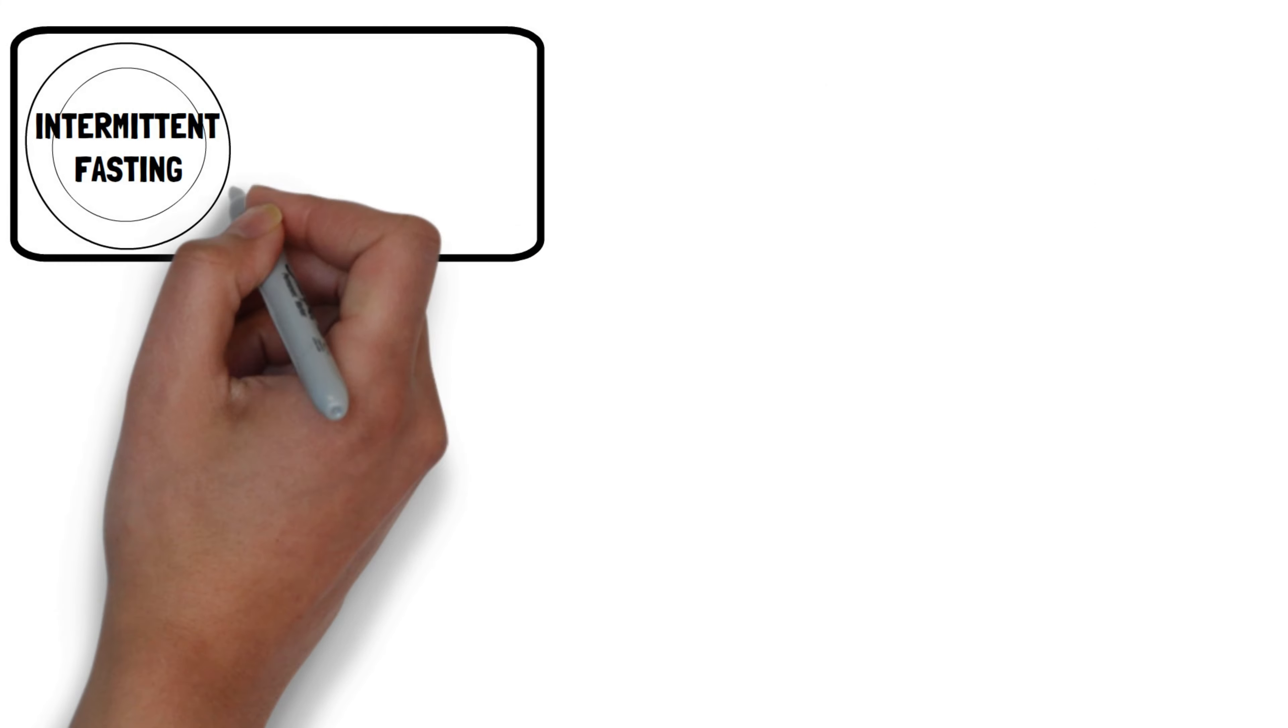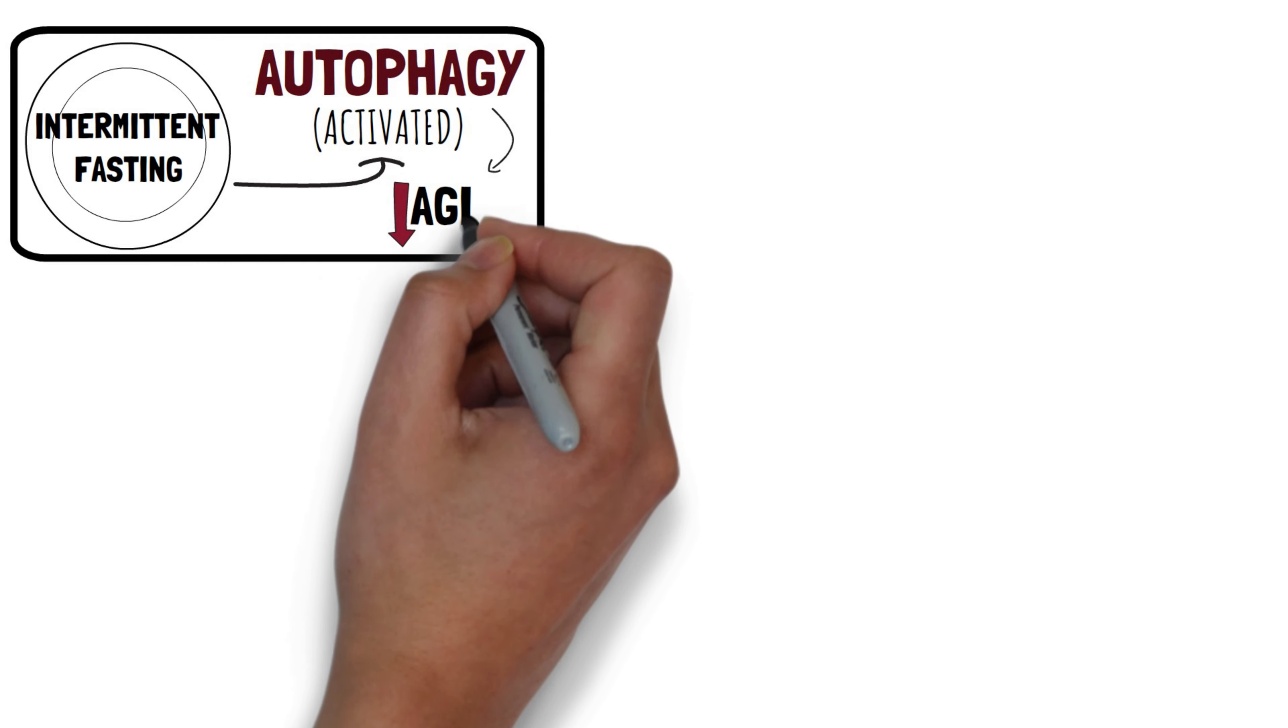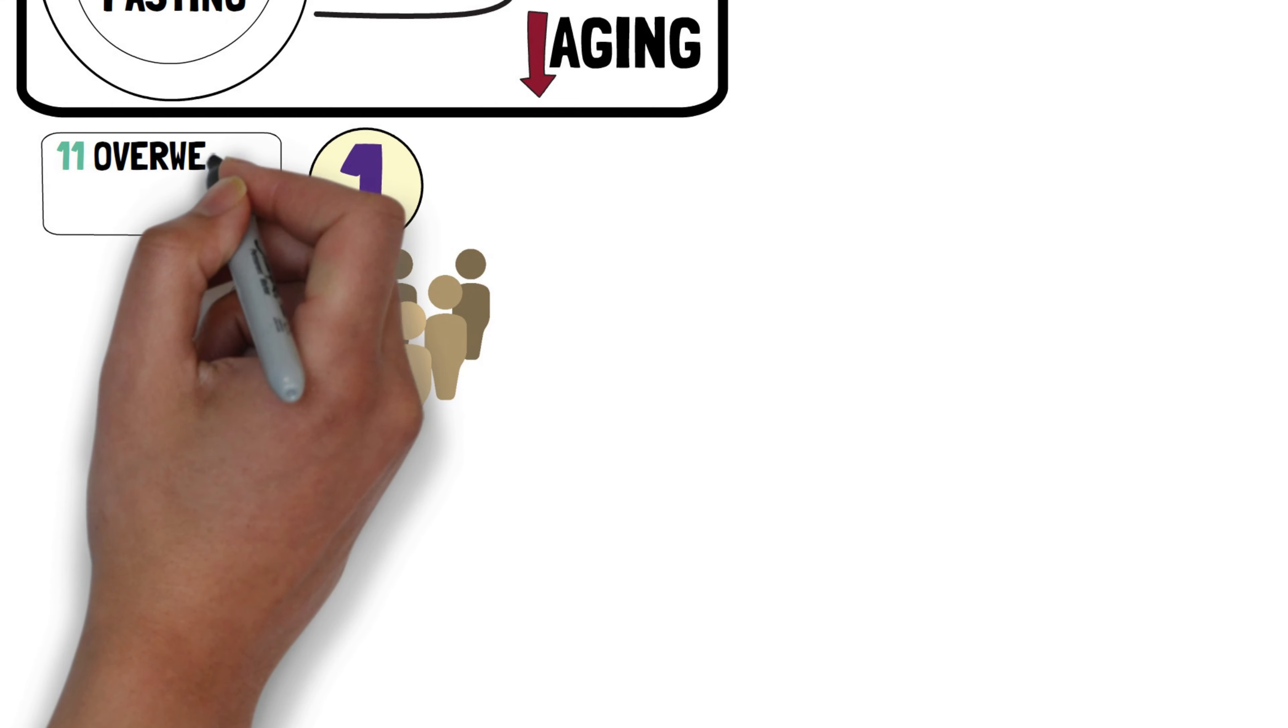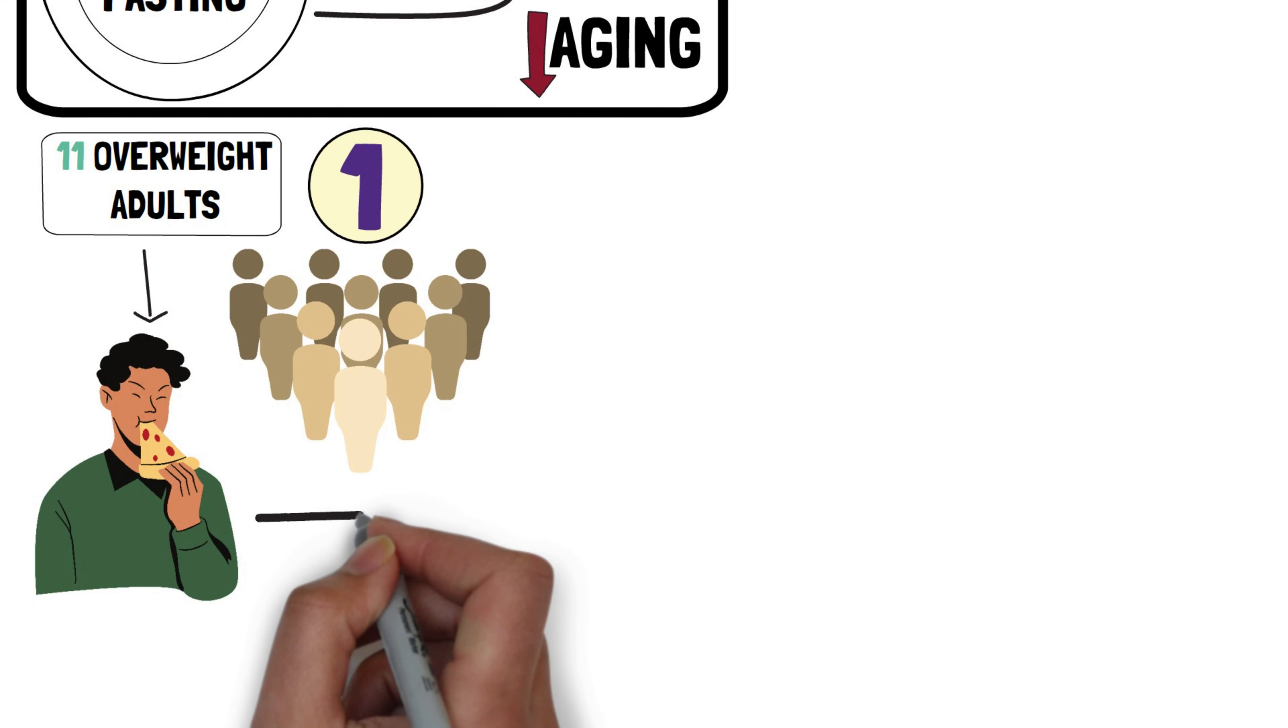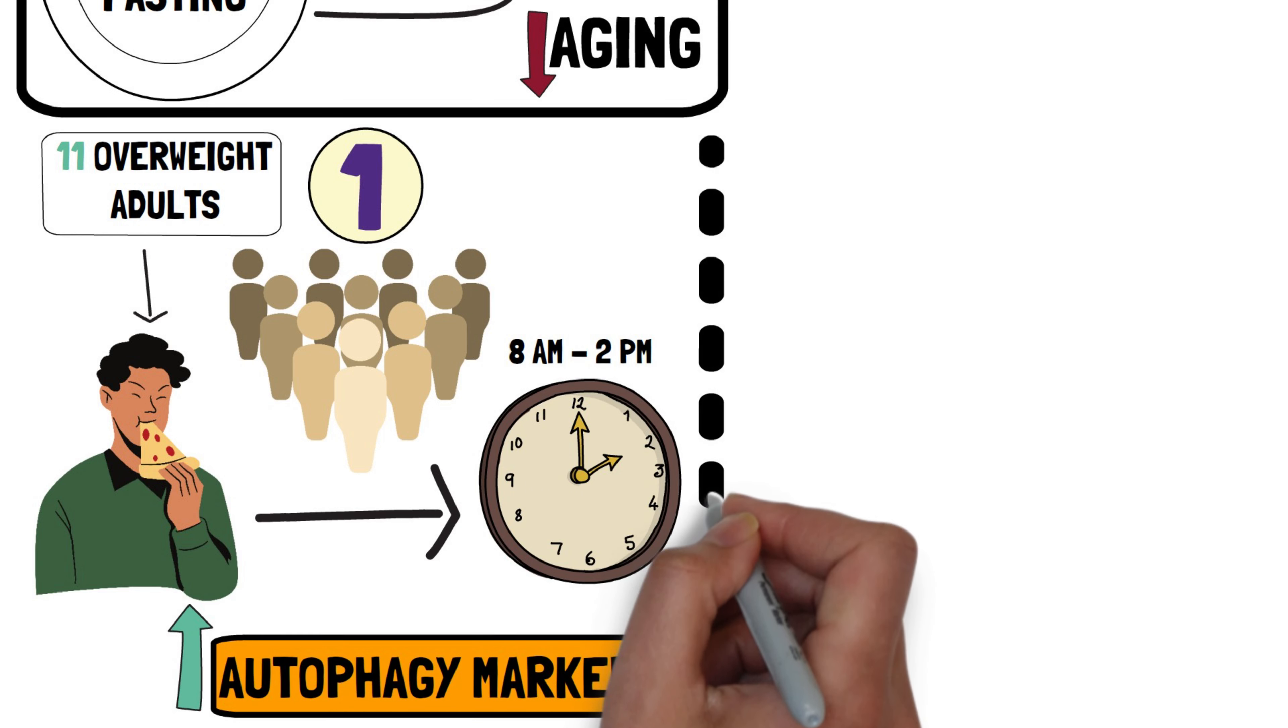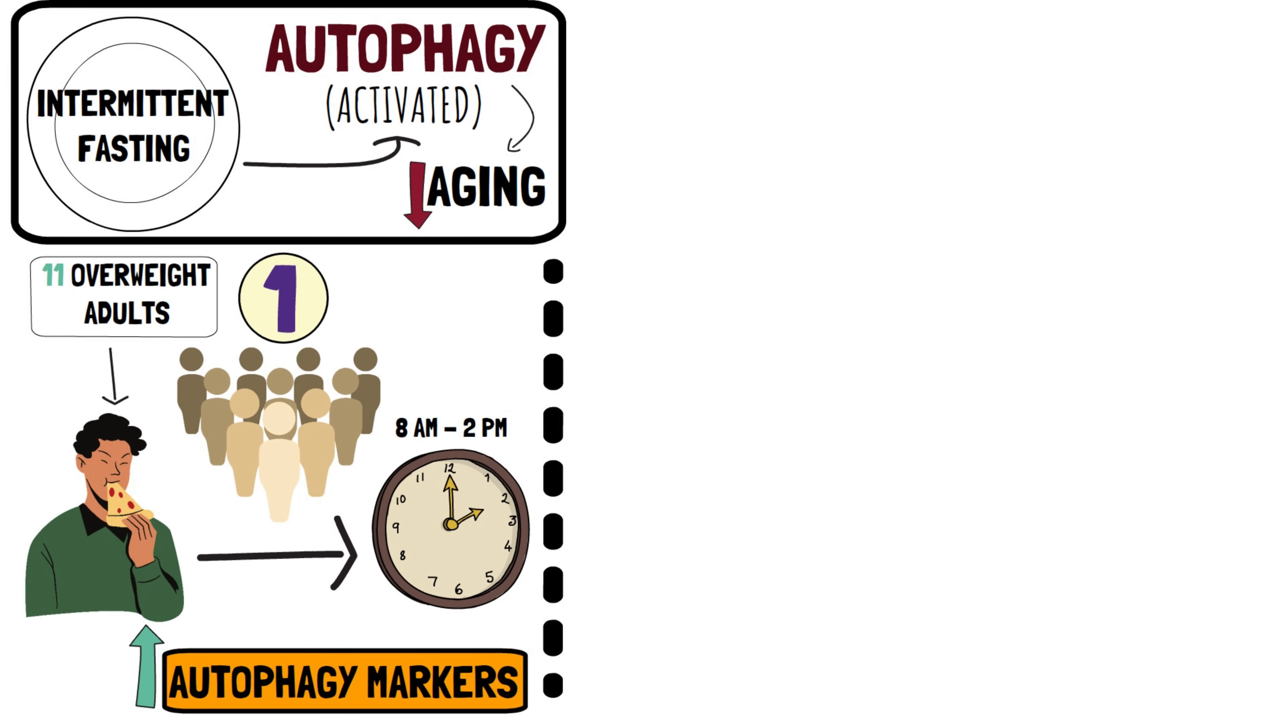Intermittent fasting is a method that may boost autophagy in your cells, potentially slowing down the aging process. In a 2019 study, 11 overweight adults who ate only between 8 a.m. and 2 p.m. showed increased autophagy markers in their blood after fasting for 18 hours, compared to those who fasted for 12 hours.